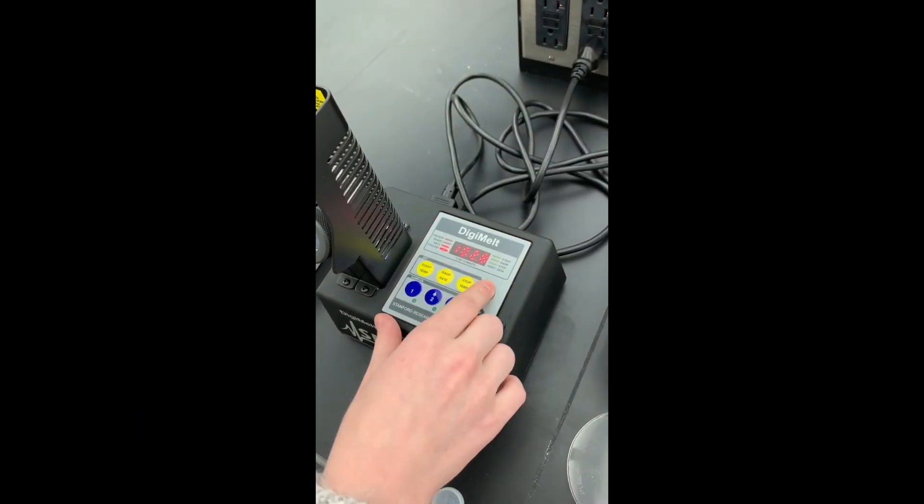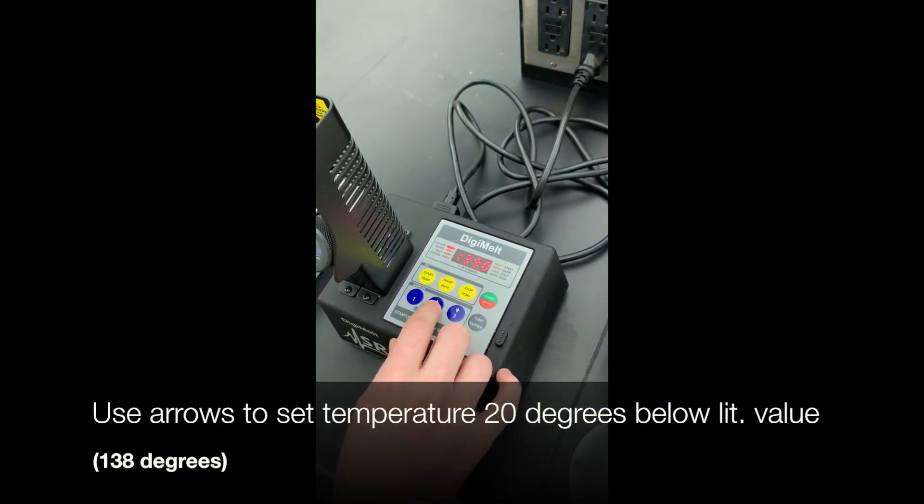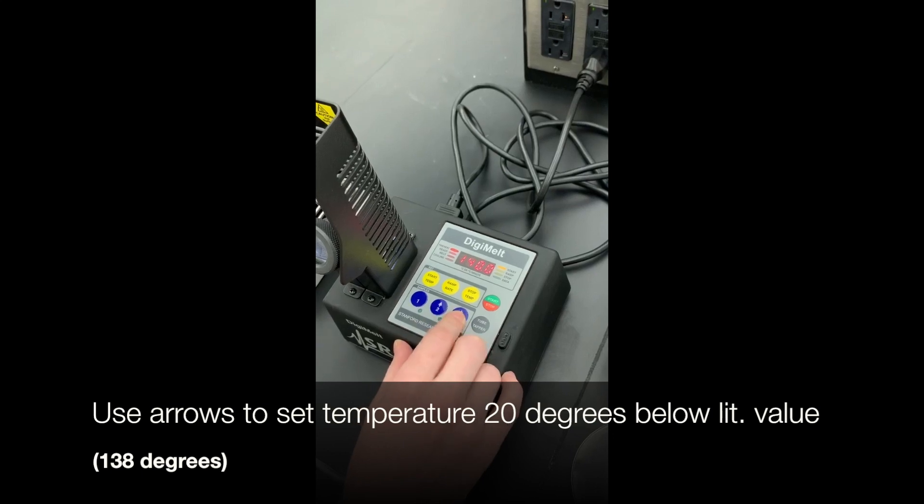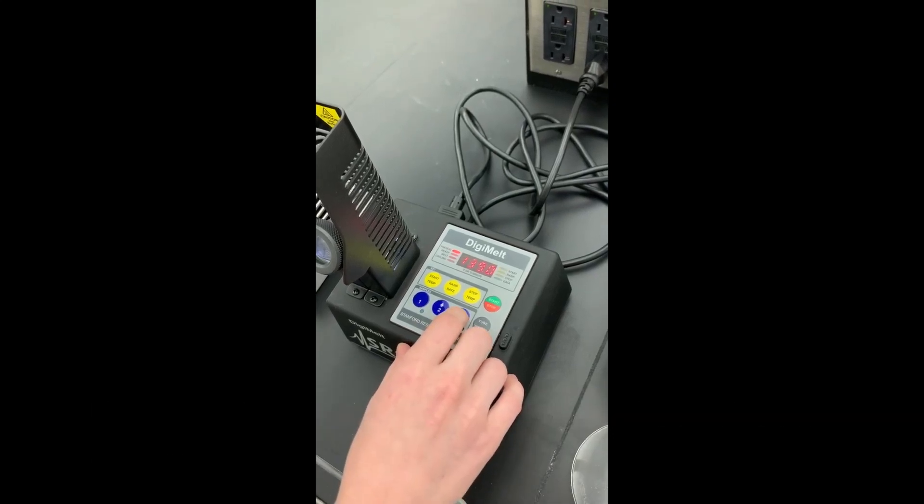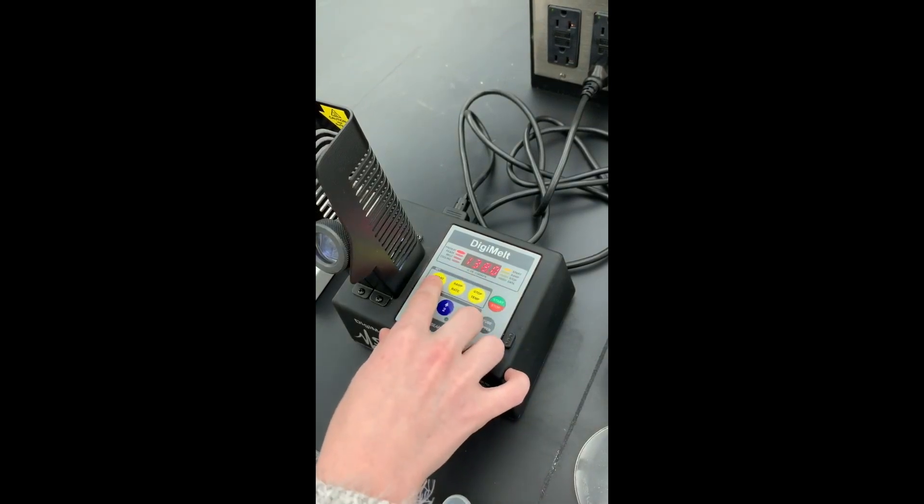Press start temp and use the arrows to set the temperature 20 degrees below the literature value of your sample. Since salicylic acid has a melting point beginning at 158 degrees Celsius, we will set the melt temp apparatus to 139 degrees Celsius.